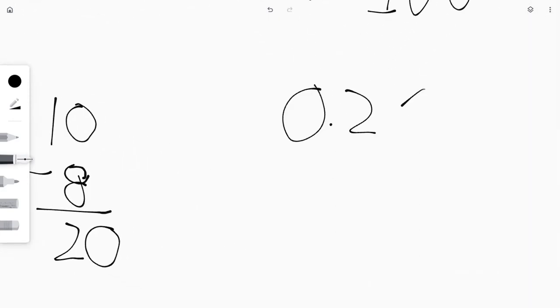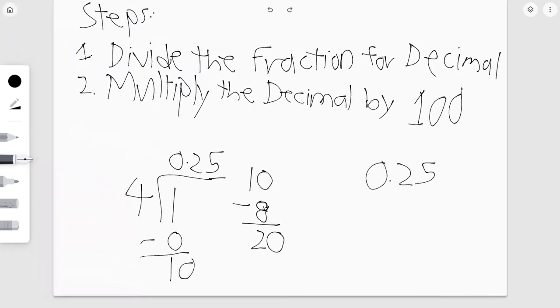Now, 0 and 25 hundredths times 100. Well, actually, we don't need to do this. It's pretty simple.